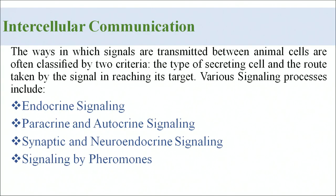Because hormones are secreted as part of a communication system, there are a number of signaling systems that function in the body. These include endocrine signaling, paracrine signaling, autocrine signaling, synaptic and neuroendocrine signaling, and signaling by pheromones.